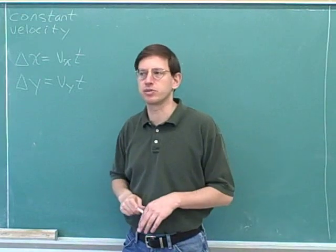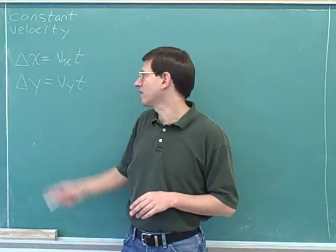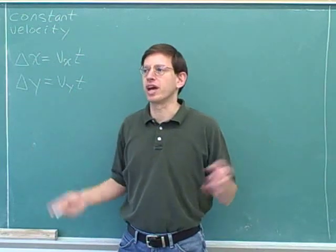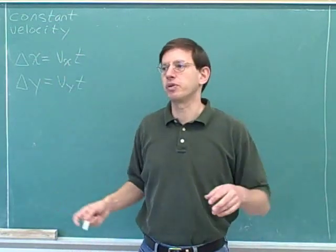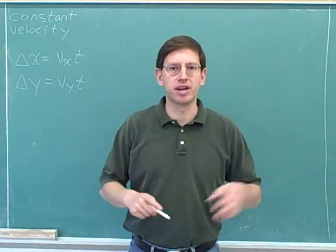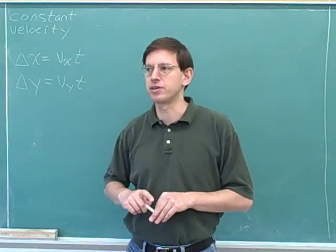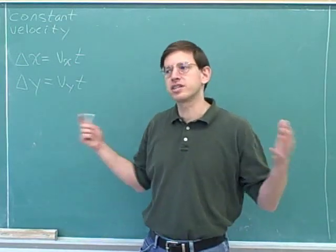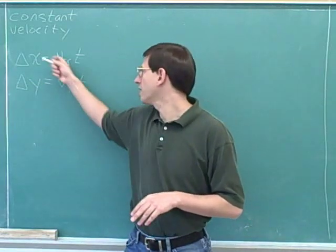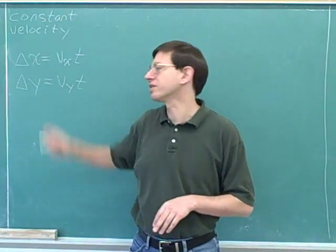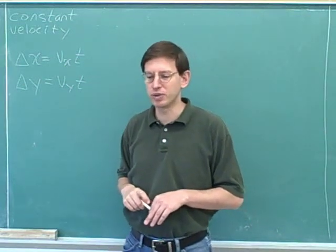That basically means distance equals rate times time. When the problem deals with constant velocity, there's only one equation to use. And of course, if we know two of the three numbers, we can find the third. So all you have to do is get two of the three variables and plug into this equation to get the third.